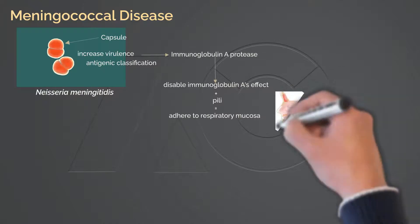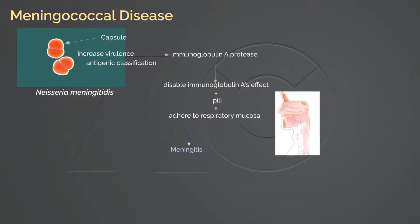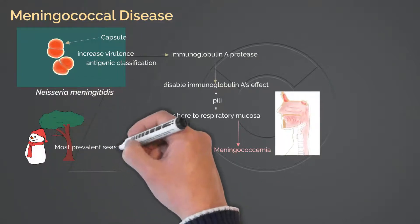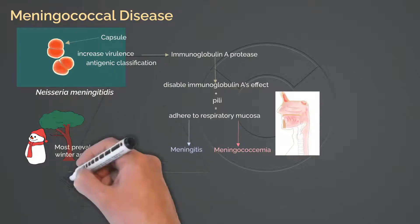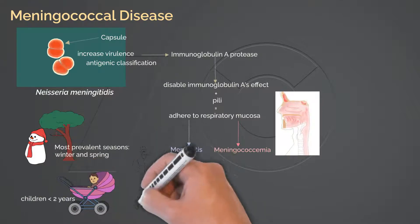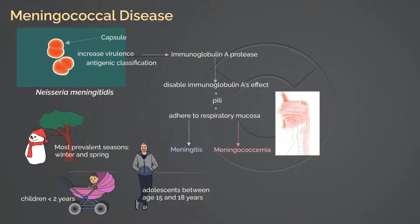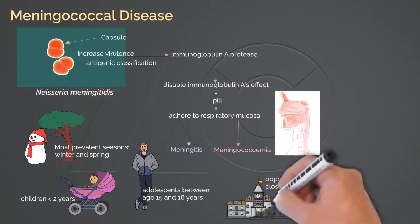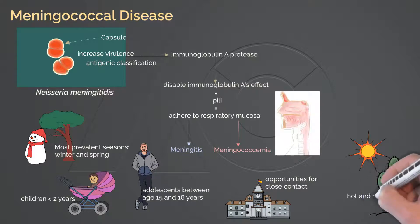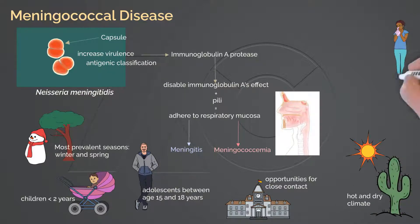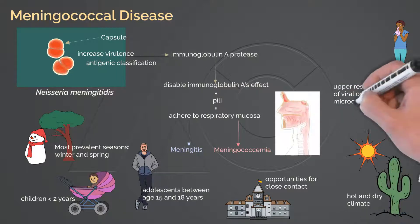In addition to being one of the most common causes of bacterial meningitis, Neisseria meningitidis can also cause meningococcemia. Both meningococcal infections have abrupt onset of intense manifestations and progress rapidly. Meningococcal infections are prevalent in winter and early spring. They generally infect children younger than age 2, adolescents between ages 15 to 18, and people in disadvantaged socioeconomic environments. This infection favors environments with close contact among people, like schools, and hot and dry climate can add to the risk. Recent upper respiratory infection caused by viral or mycoplasma microorganisms is also a risk factor.